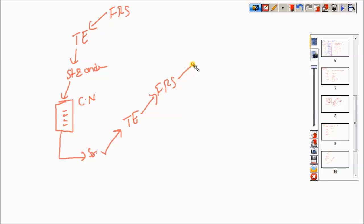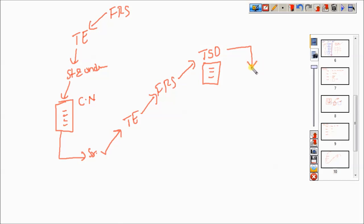Once clarified, the test engineer goes for the FRS document again and understands it in a very clear manner. Whenever they understand all the requirements clearly, the test engineer starts finding the test scenarios. All the test scenarios are mentioned into one document called the test scenario document. For each and every scenario, they start writing the test cases, mentioned into one document called the test case document. After the test case is written, they conduct peer reviews.